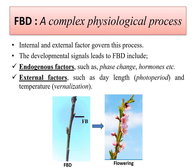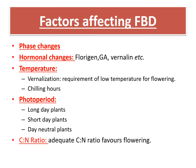Flower bud differentiation is called a complex physiological process because multiple events take place when the vegetative meristem converts to the reproductive or floral meristem, and there are several factors that govern this whole process. Internal factors include phase changes, hormones, etc. External factors include photoperiod and temperature. There are a number of factors which affect flower bud differentiation, so let's discuss these different factors one by one.